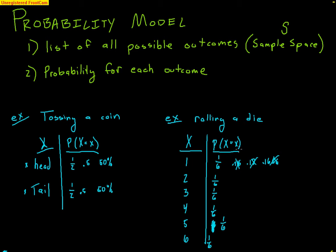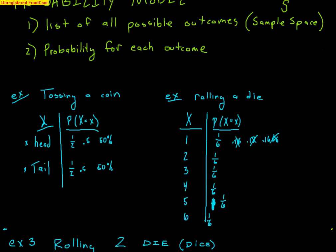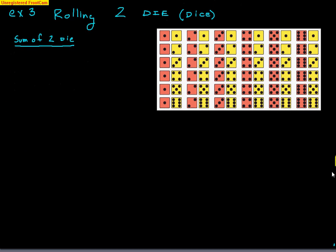These are two probability models where the probabilities are equally likely — the chance of getting a 1 is equally as likely as any other number. Let's look at an example where that might not be true: rolling 2 dice. There are 36 total options. If you think about 6 options for the first die times 6 options for the second die, you get 36 options total.